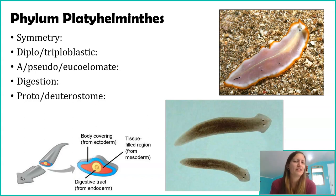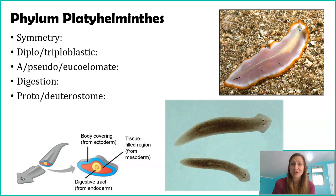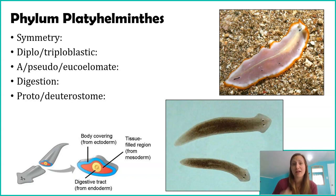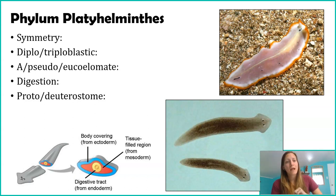Now I'm going to skip digestion for a second and jump to the protostome-deuterostome distinction. You may have noticed that they're on the protostome branch when looking at the phylogenetic tree, and the ancestors of our Platyhelminthes were protostomes. Remember, this means you have two openings — which would be complete digestion — and that the mouth is forming first.